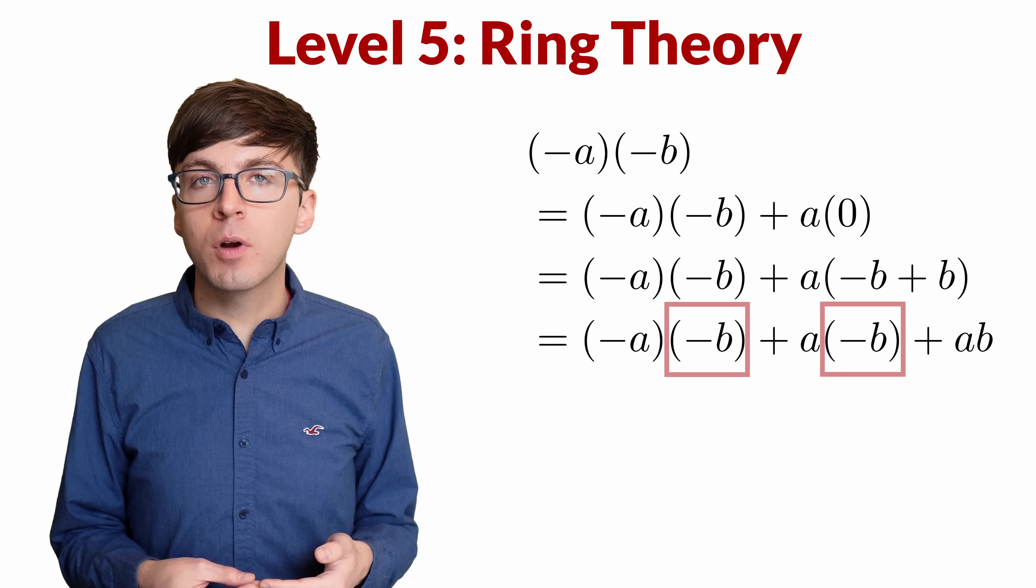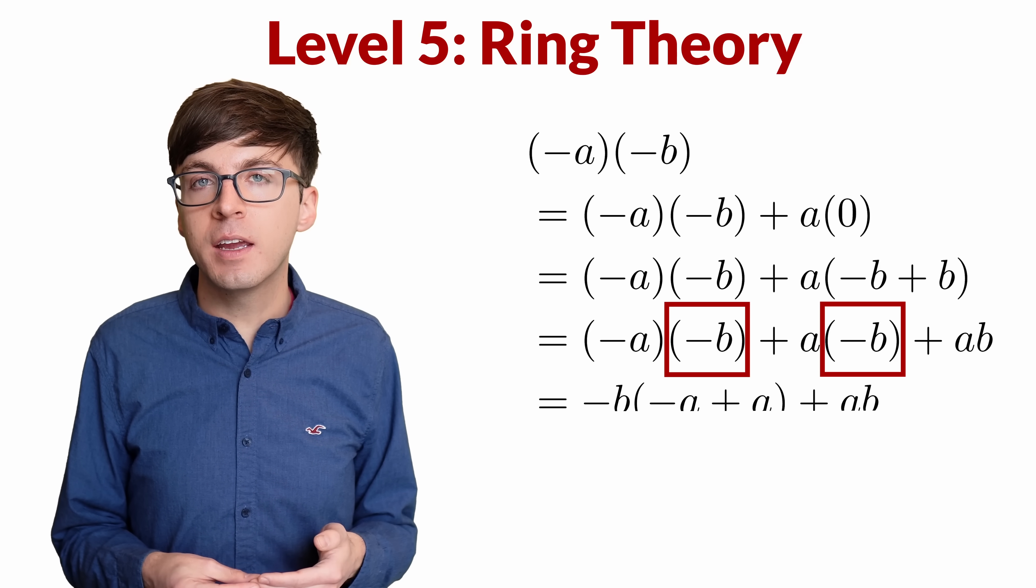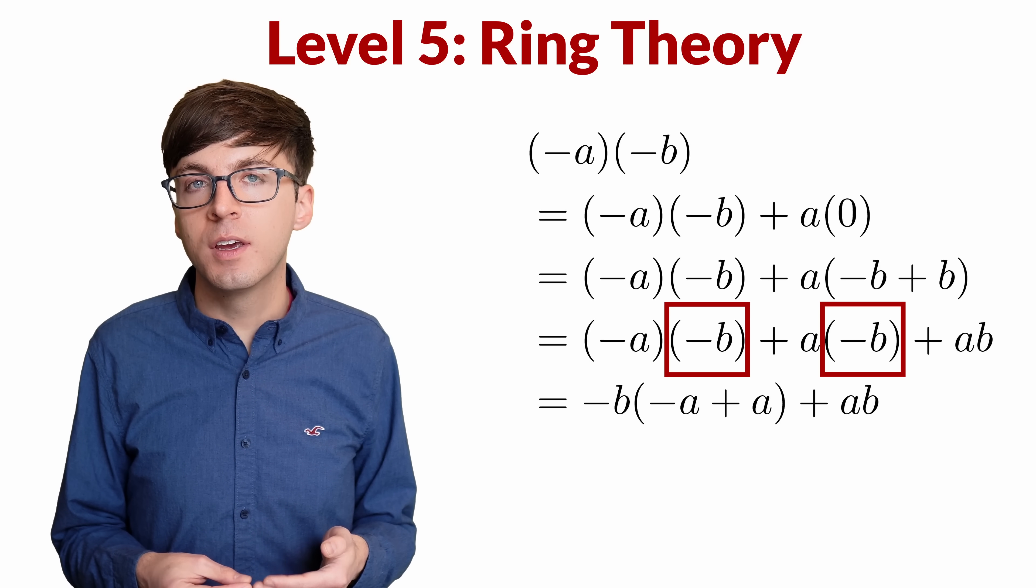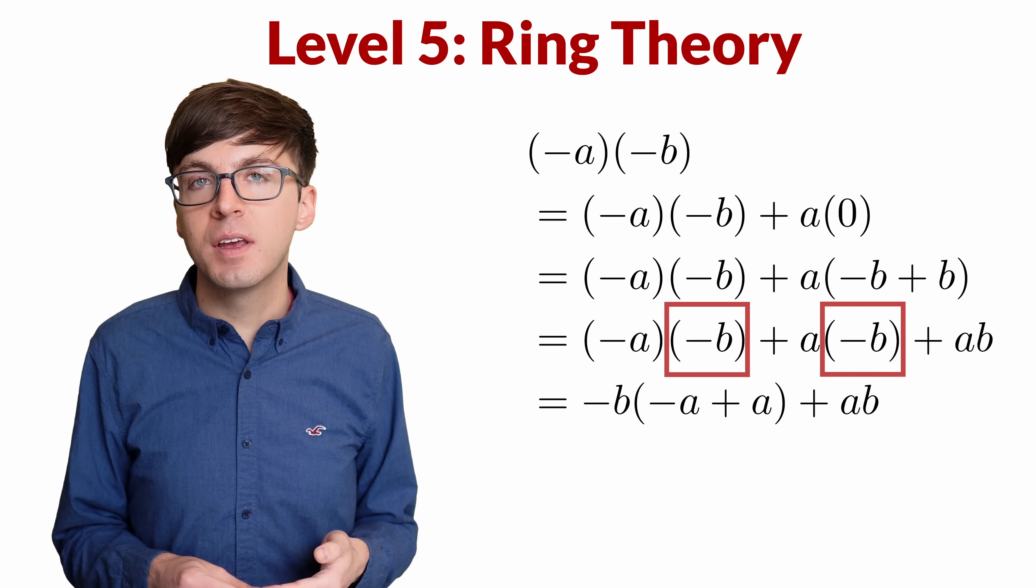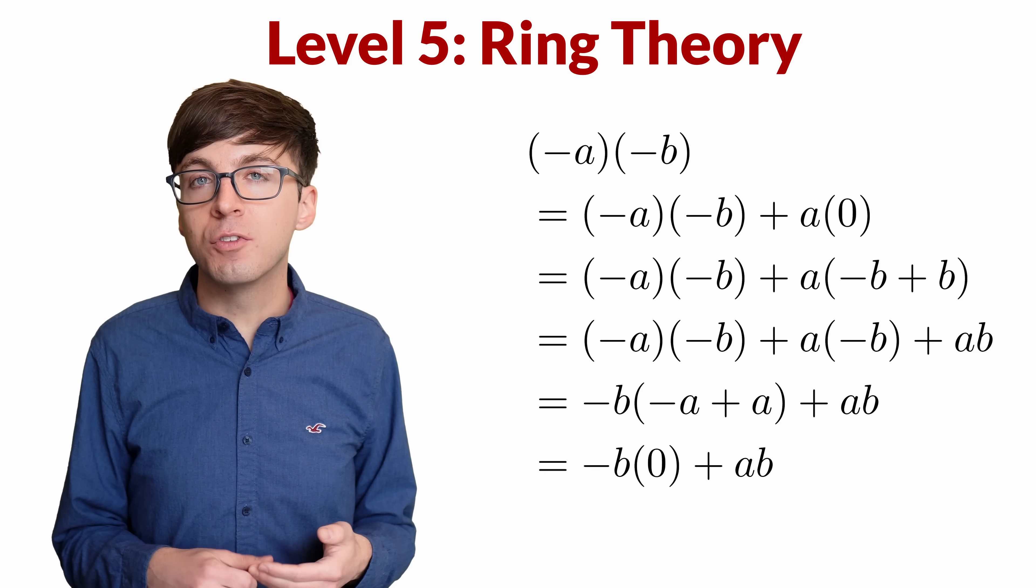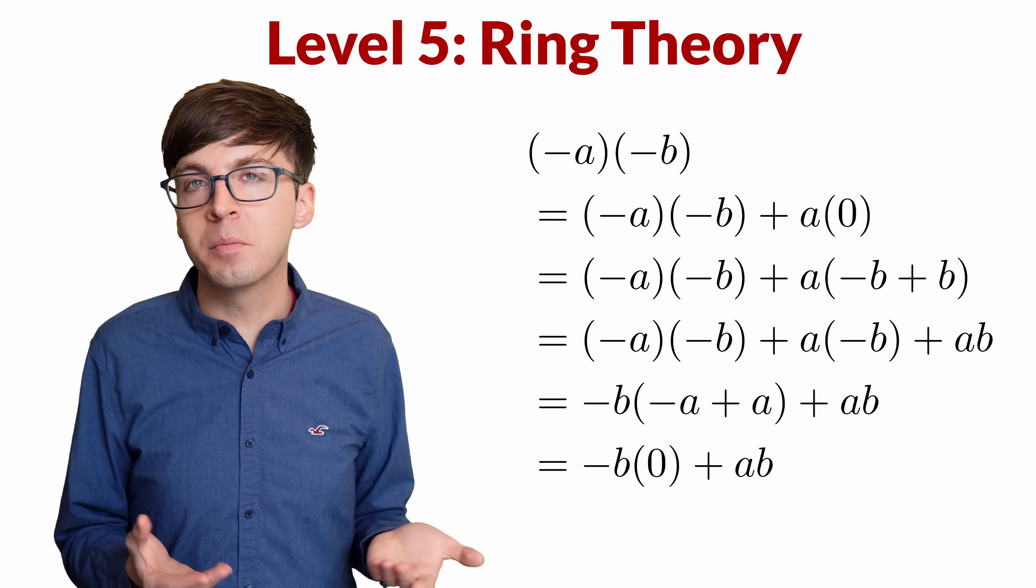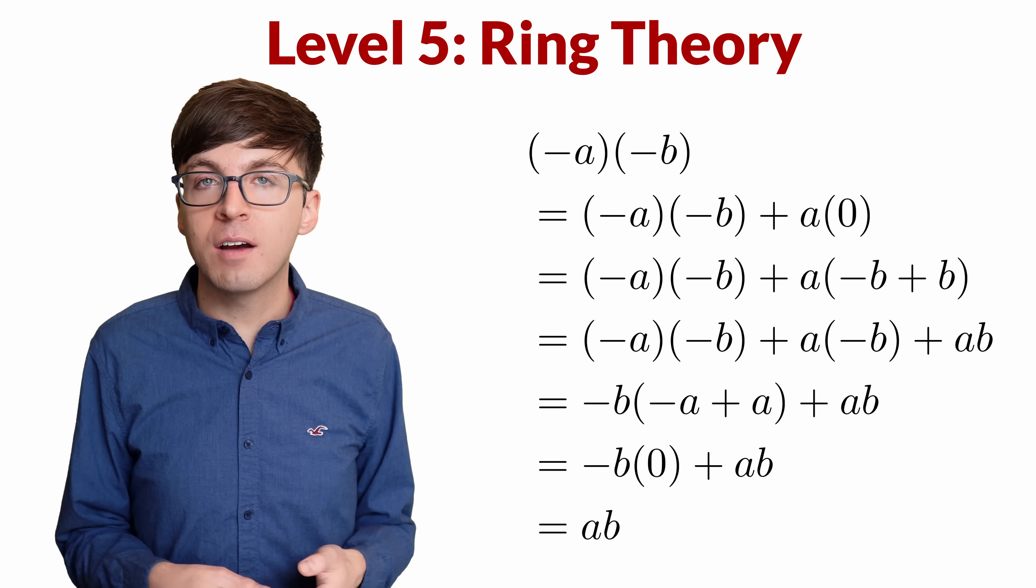Now use the distributive property again to factor the negative b from the first two terms. We get negative b times (negative a plus a) plus ab. Notice negative a plus a is just 0, so that first term is just 0, and all we have left is ab.